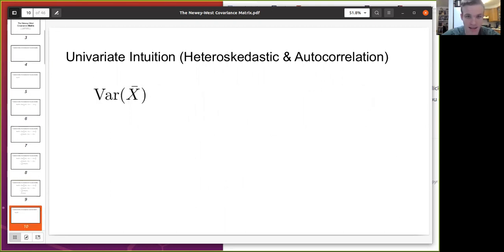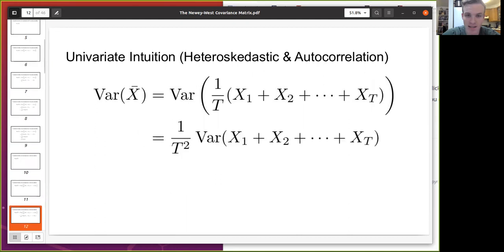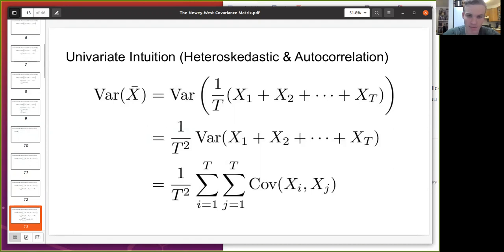So that's that, but if we have heteroskedastic errors and autocorrelation, basically the formula doesn't reduce quite as nicely. We start off at the same place, but when we break apart the variance, we end up with all the covariance terms. So you kind of end up with like a grid of covariance terms that we have to add up.